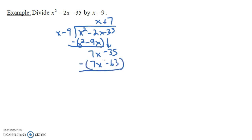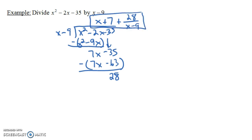7 times x minus 9 gives us 7x minus 63. We're subtracting this, so 7x minus 7x goes away. Then negative 35, and it's going to be plus 63 because negative negative 63, which gives us 28. So we put plus 28 over x minus 9. When we say what is x squared minus 2x minus 35 divided by x minus 9, it's x plus 7 plus 28 over x minus 9. We had a remainder of 28, so x minus 9 is not actually a factor of x squared minus 2x minus 35.